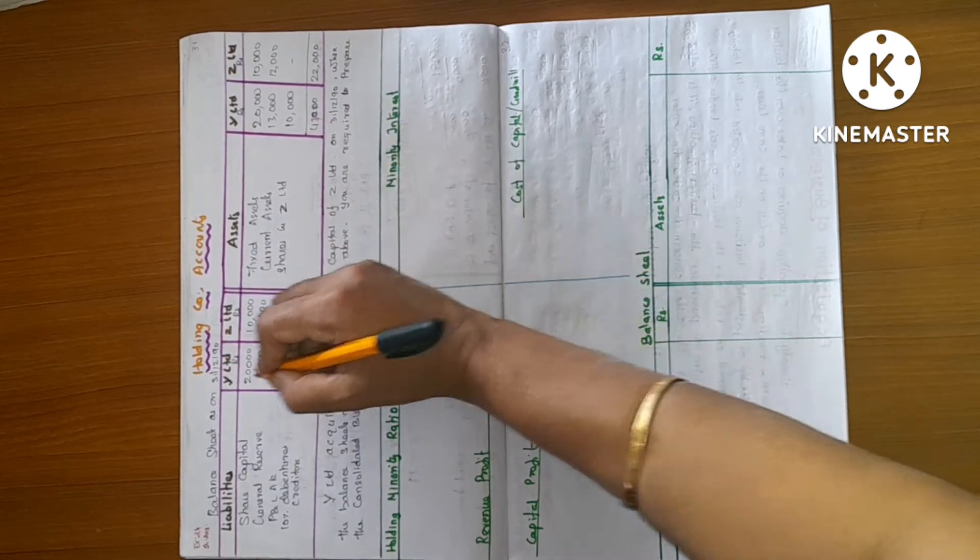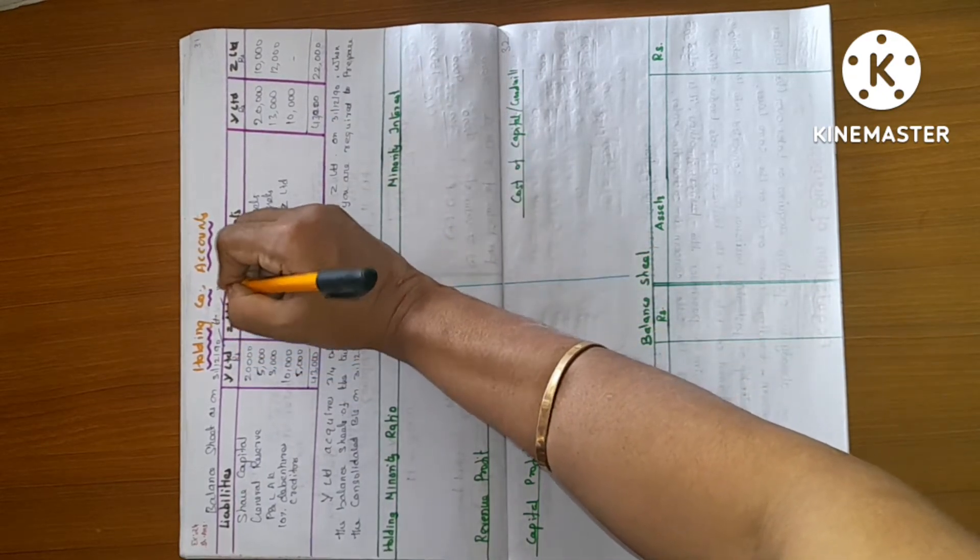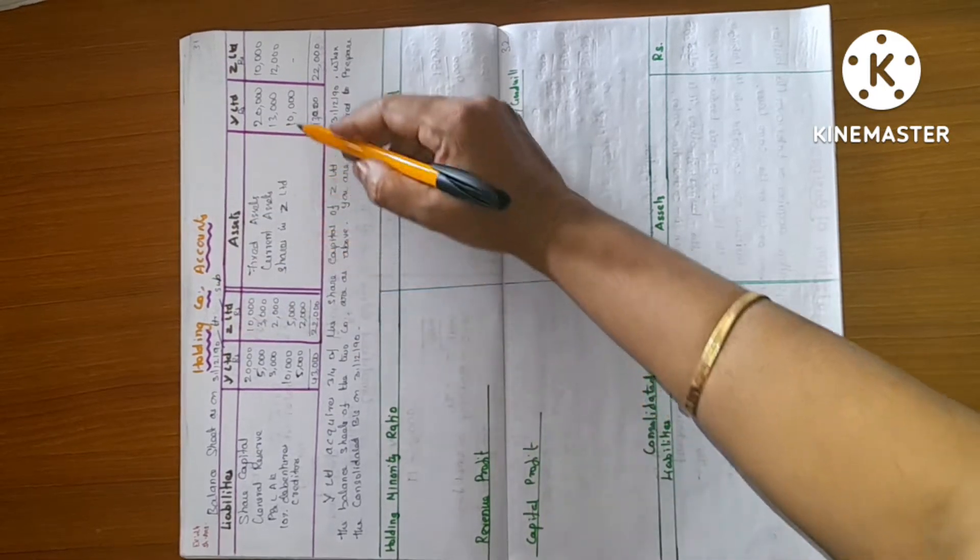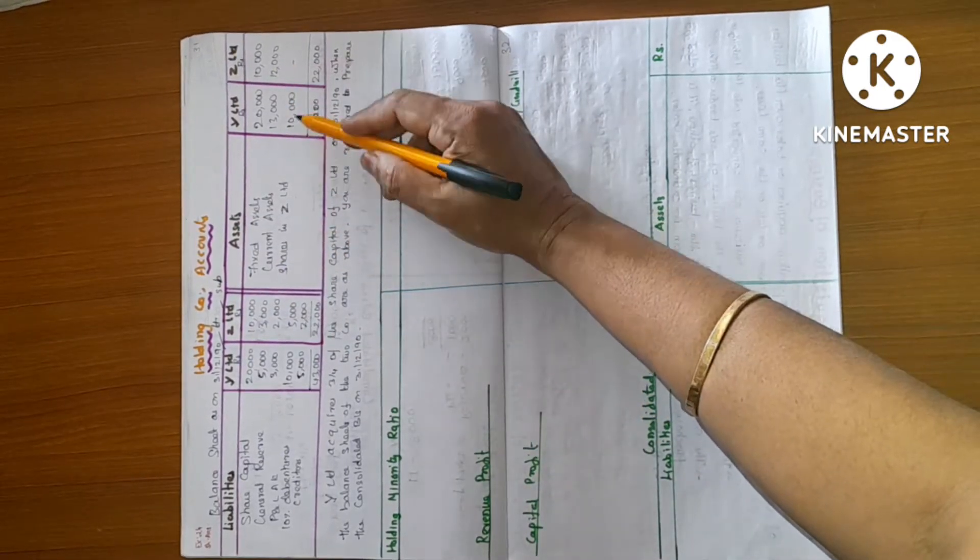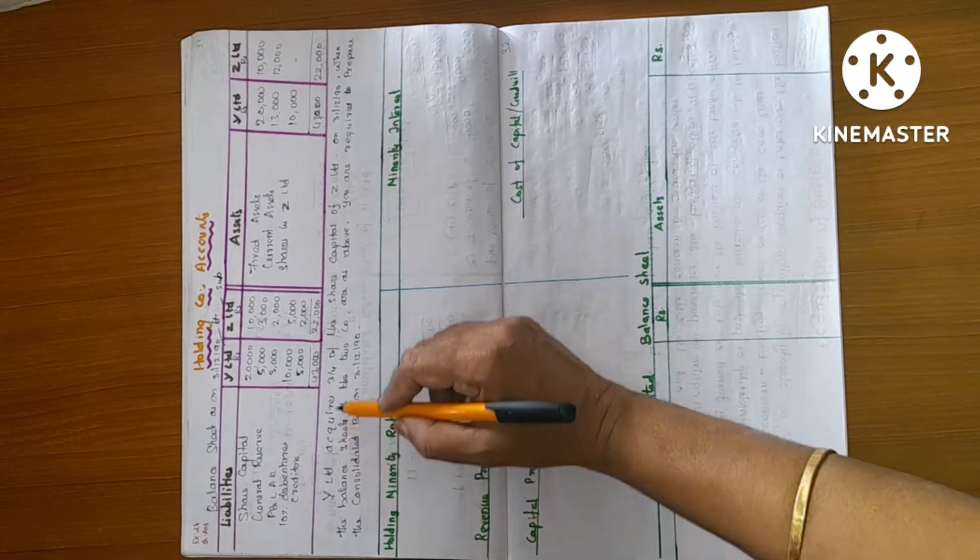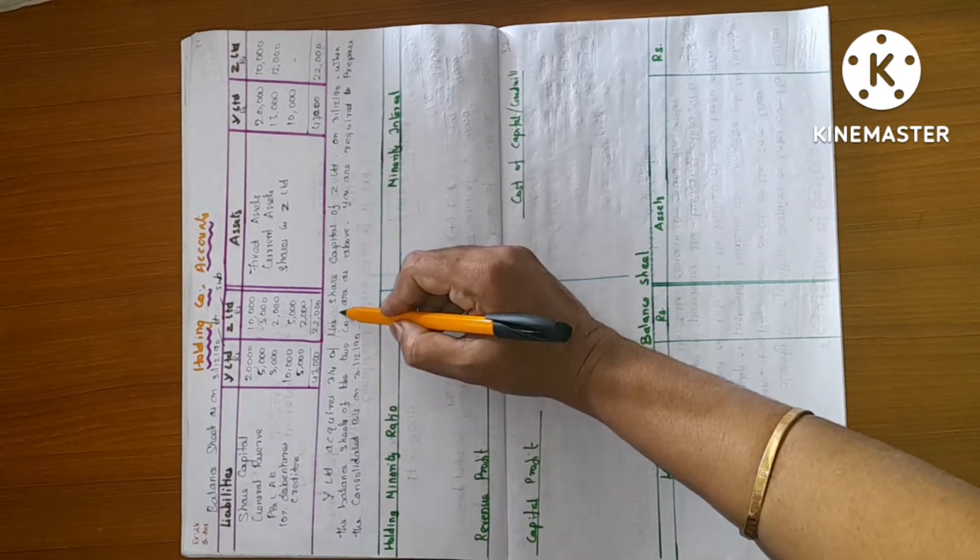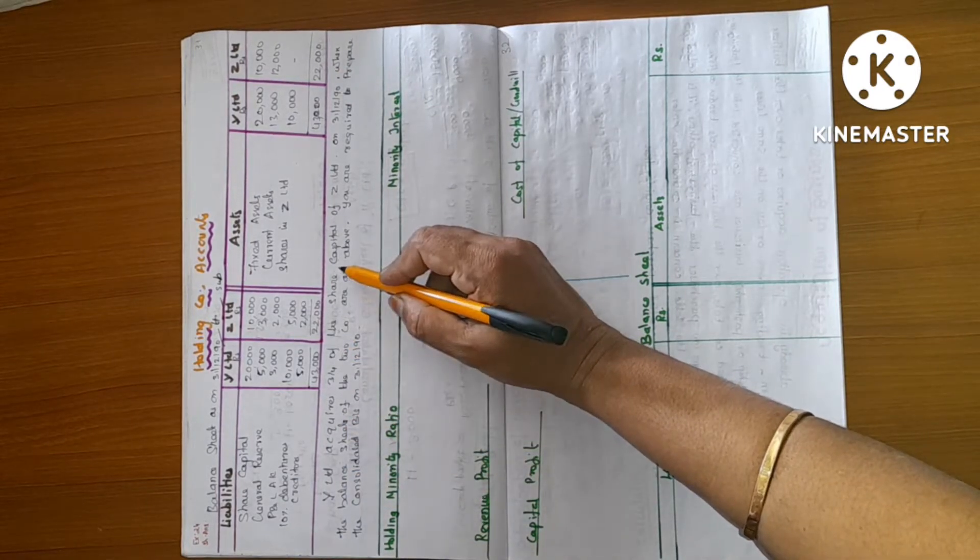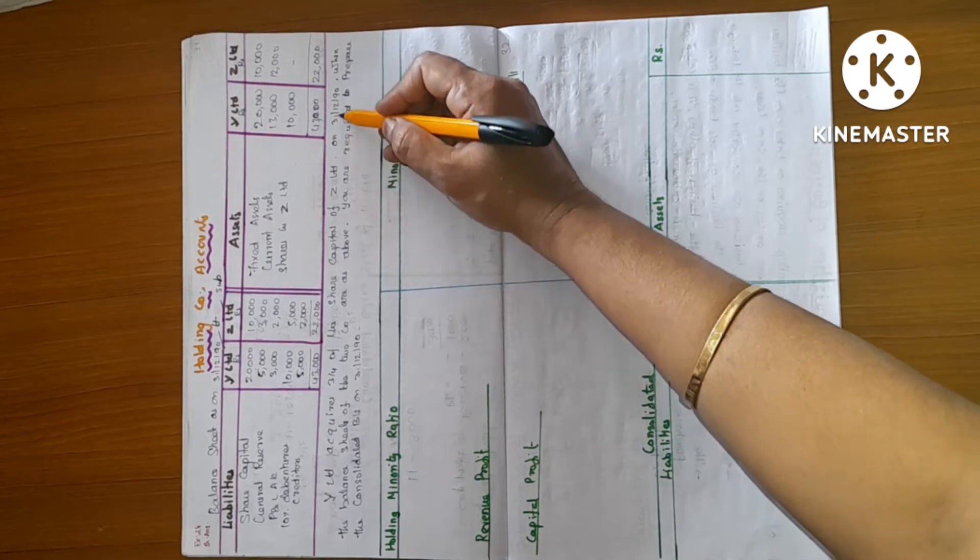It is a holding company. It is a subsidiary company. Z, Y. 10,000. Y Limited, 3/4th of shares. There are three shares. The capital of Z Limited on 31st 1290.